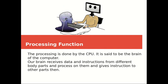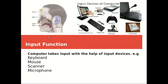Now, the processing function — processing is done by the CPU, which is said to be the brain of the computer. Our brain receives data and instructions from different body parts, processes them, and gives instructions to other parts. Input devices provide data to the computer.